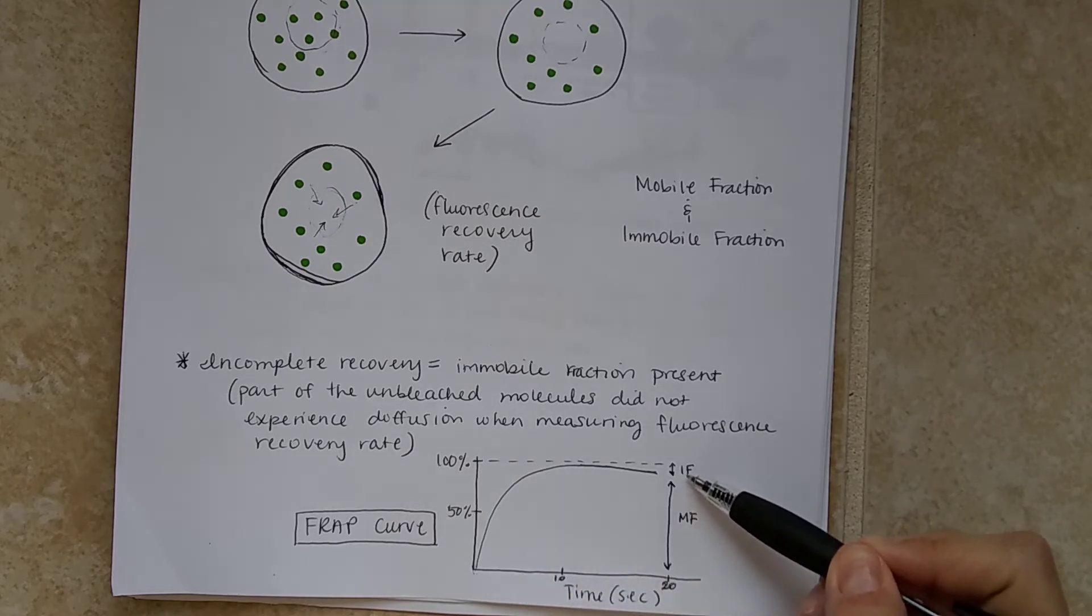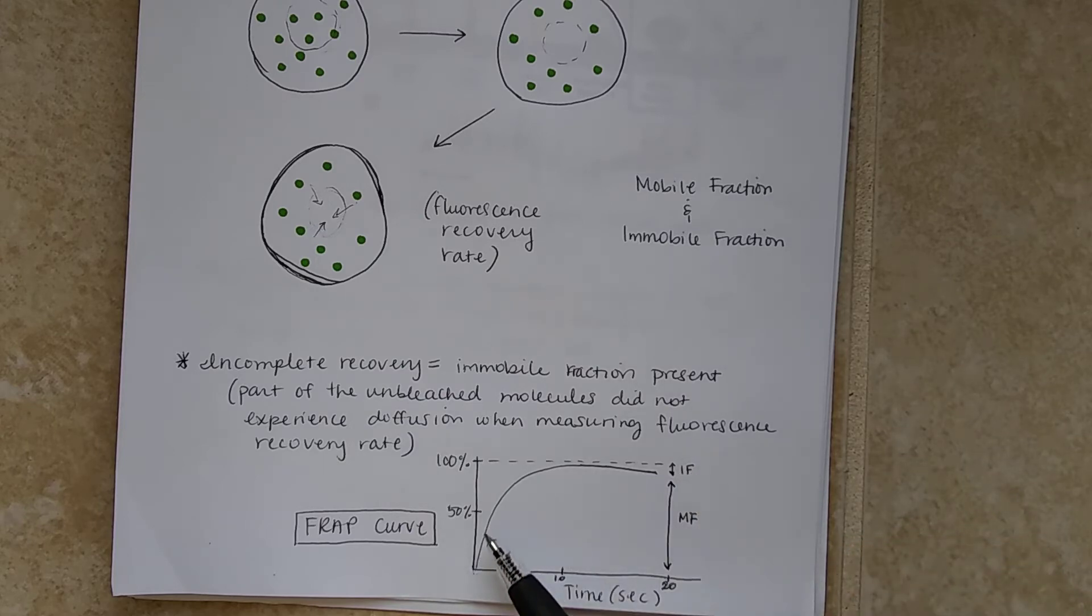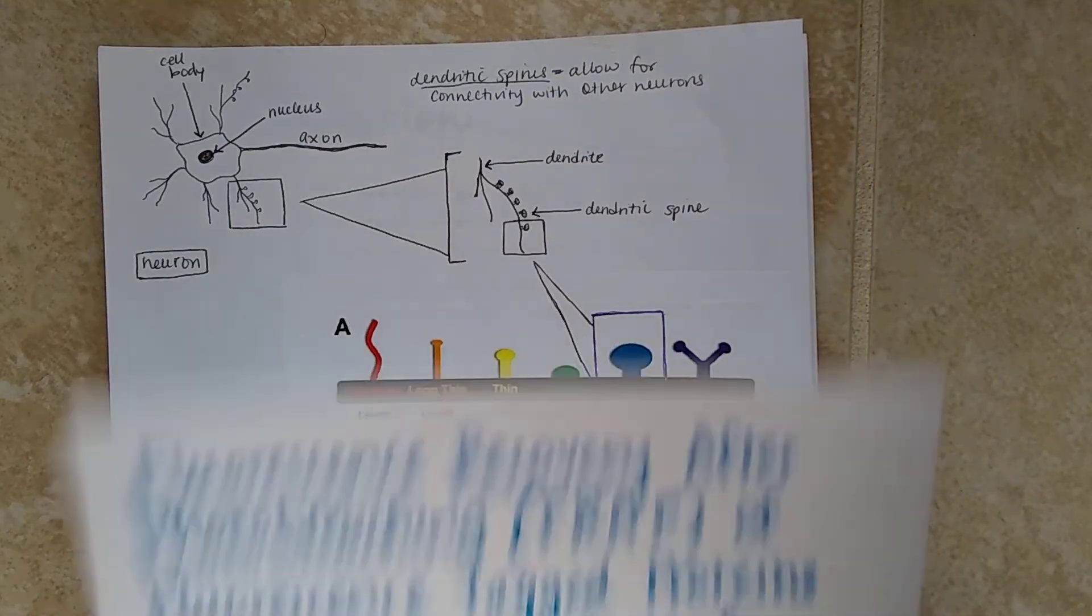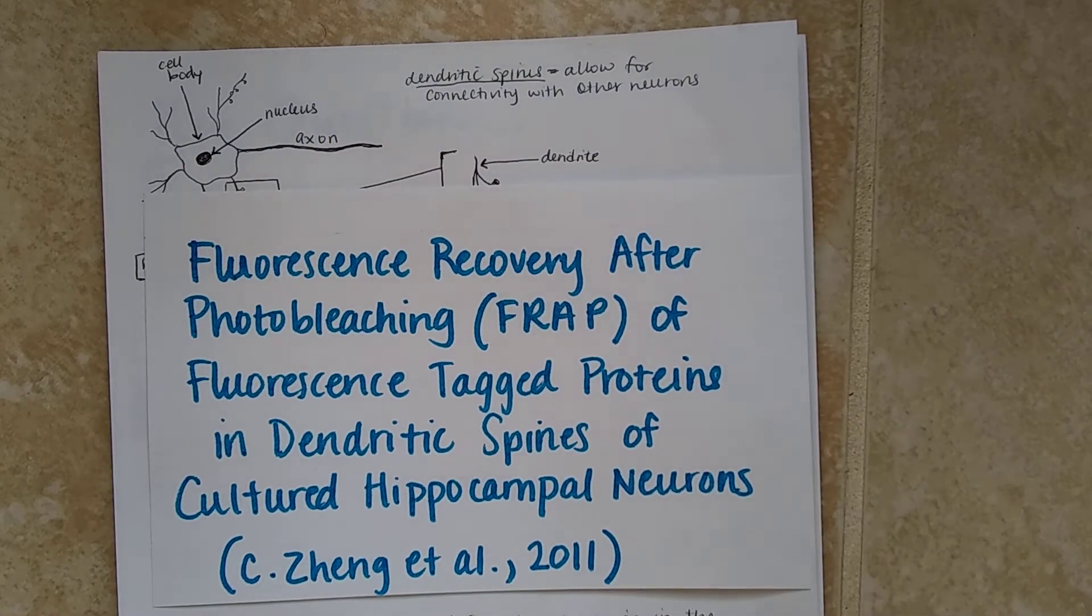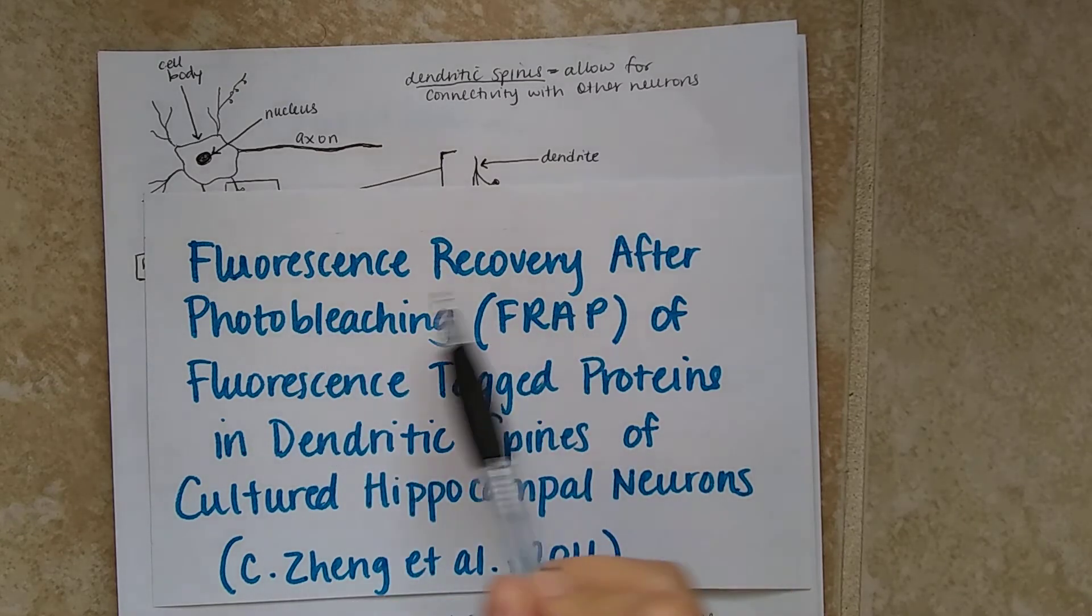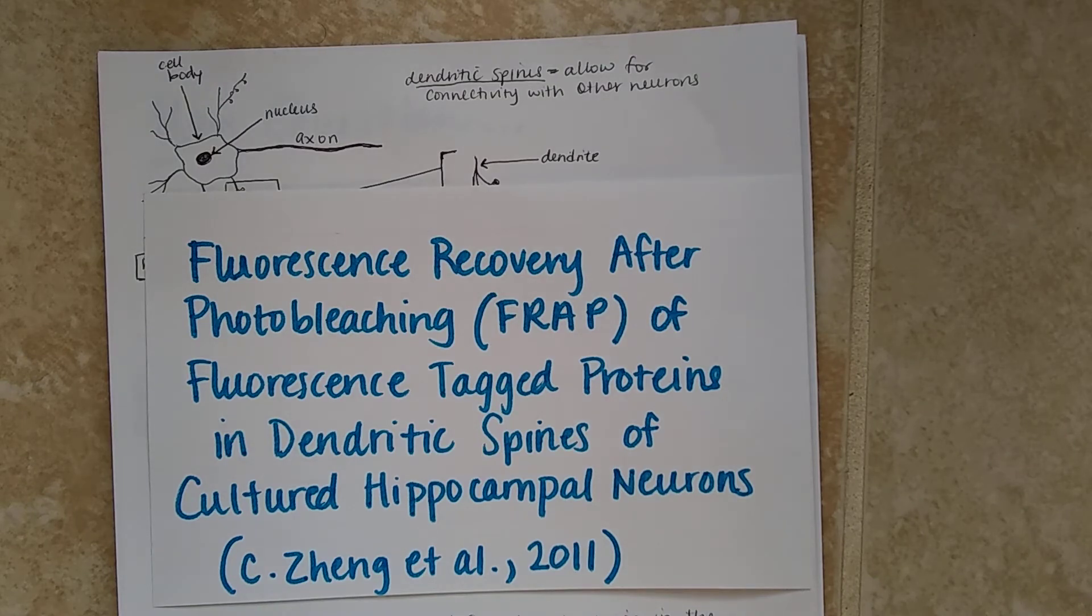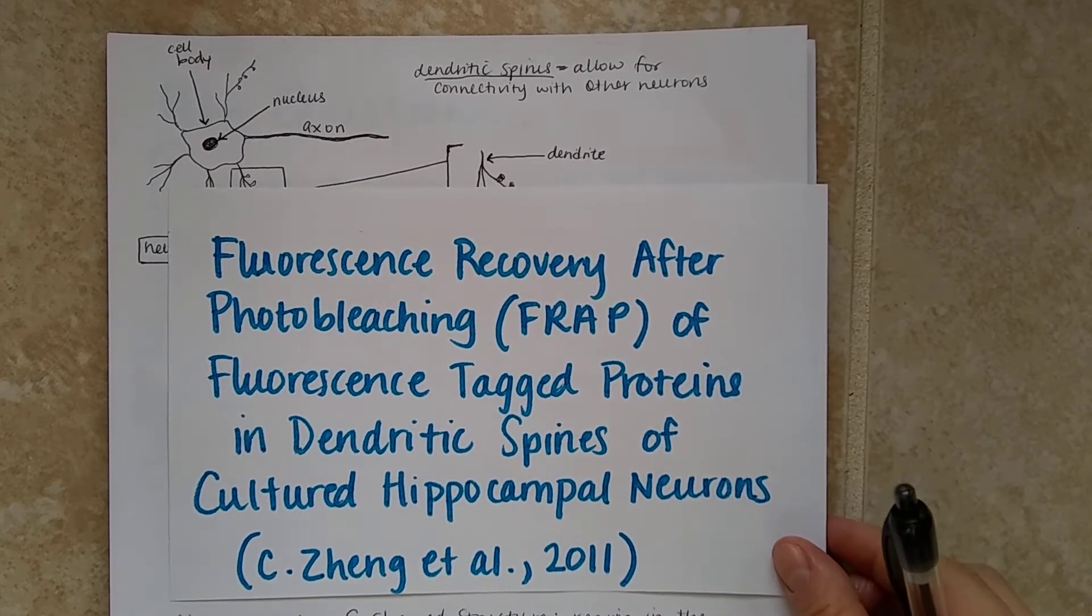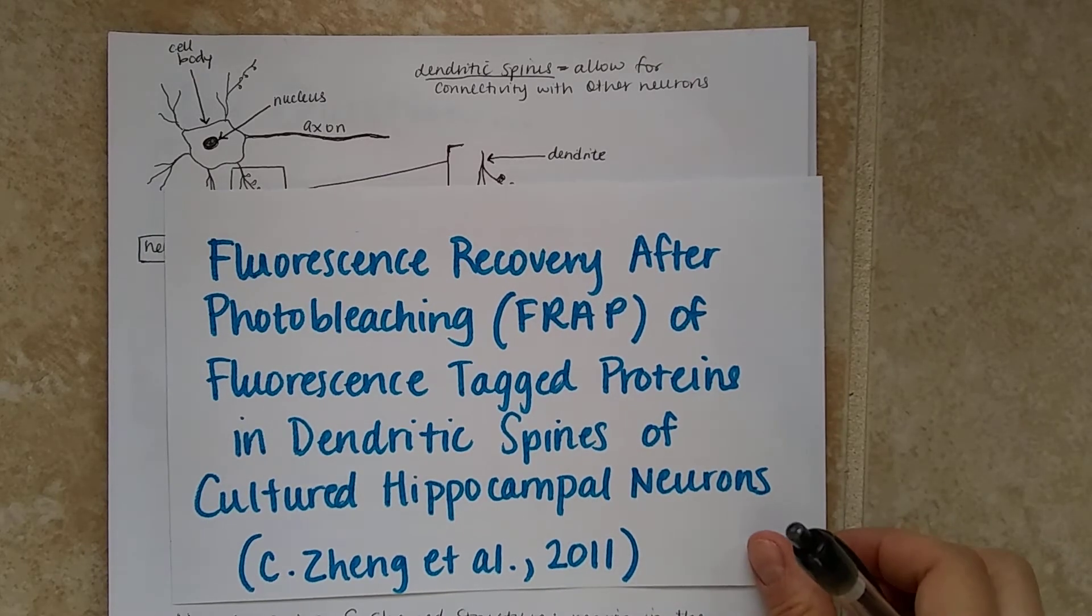However, there is a mobile fraction that is present that will most likely not allow the fluorescence to return back to 100% before it was photobleached. So there was an article that I was looking at. It is called Fluorescence Recovery After Photobleaching of Fluorescence Tag Proteins in Dendritic Spines of Cultured Hippocampal Neurons. So we talked about what FRAP is and what it does and how it works. But let's go into further detail about what dendritic spines are and where they're found and how we can use FRAP to look at fluorescence in the spines.